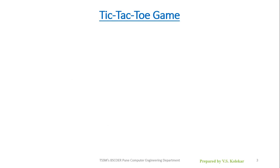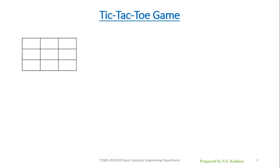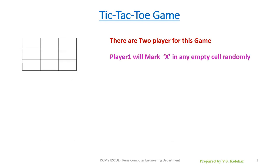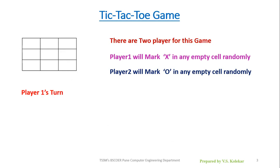Tic-tac-toe is a game I hope everyone has played at least once. In this game we have a board of size three by three — three rows and three columns. There are two players. Player one will mark X in any empty cell randomly, and player two will mark O in an empty cell randomly. Let's play this game. Player one marks X at the middle cell. Now it's player two's first turn and they mark O on the right corner cell.